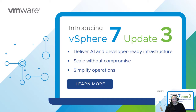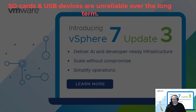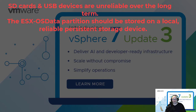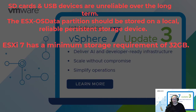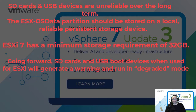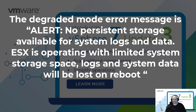Here's what VMware stands for regarding SD cards: SD cards and USB devices are unreliable over the long term. The ESXi OS data partition should be stored on a local reliable persistent storage device. ESXi 7 has a minimum storage requirement of 32 gigabytes. Going forward, SD cards and USB boot devices used for ESXi will generate a warning and run in degraded mode. The degraded mode error message is: 'Alert - no persistent storage available for system logs and data. ESXi is operating with limited system storage space; logs and system data will be lost on reboot.'